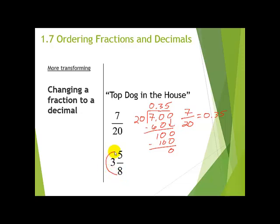When I make my mad face, I multiply and then I add. Tilt your head to the left — hopefully that helps you see the mad face a little bit better. 8 times 3 is 24, and 24 plus 5 is 29, so we get 29 over 8.